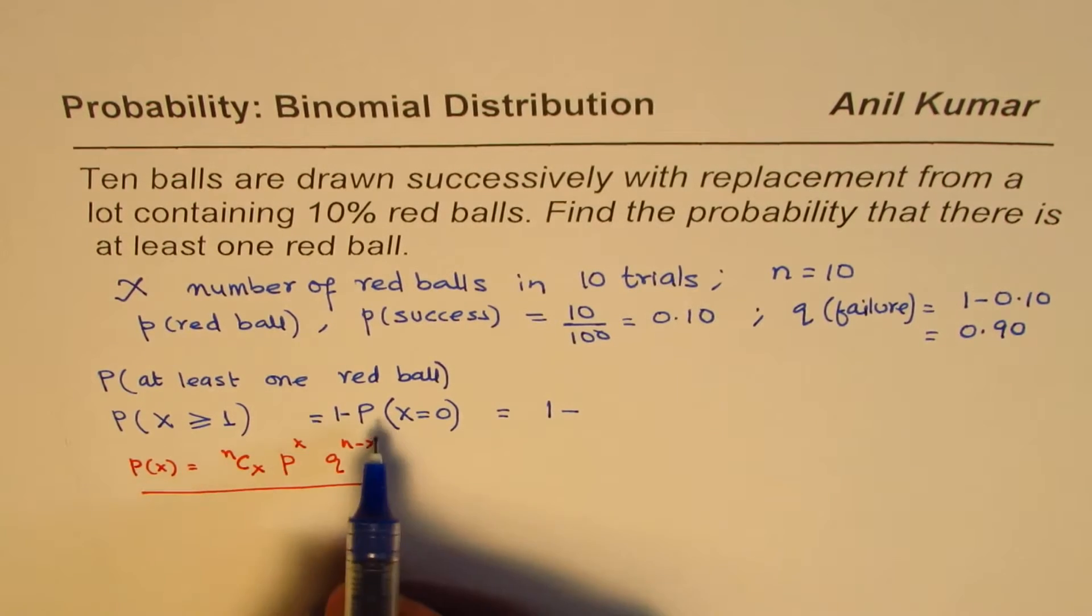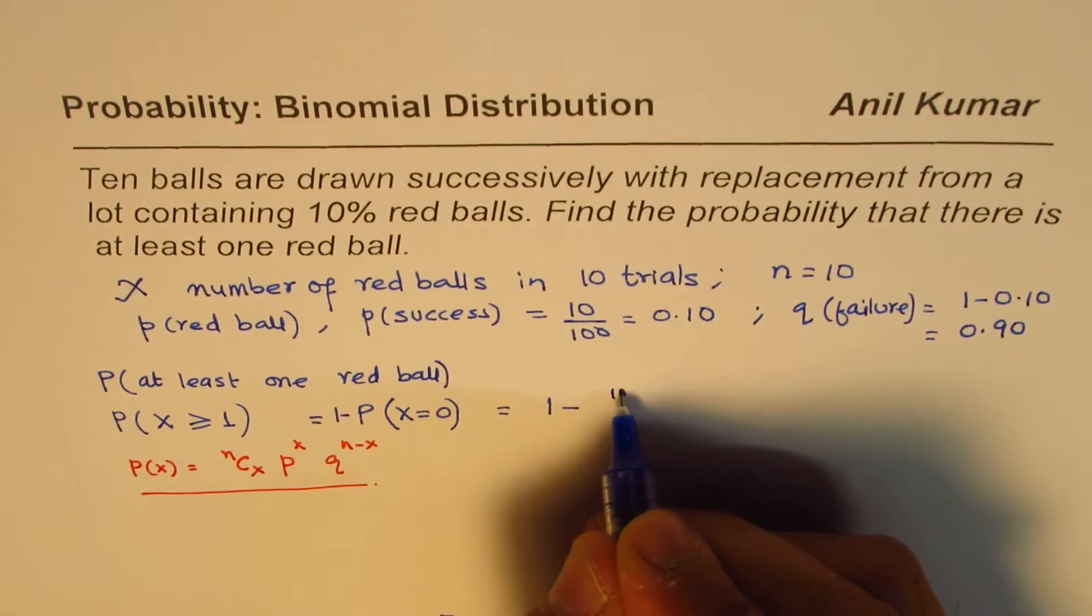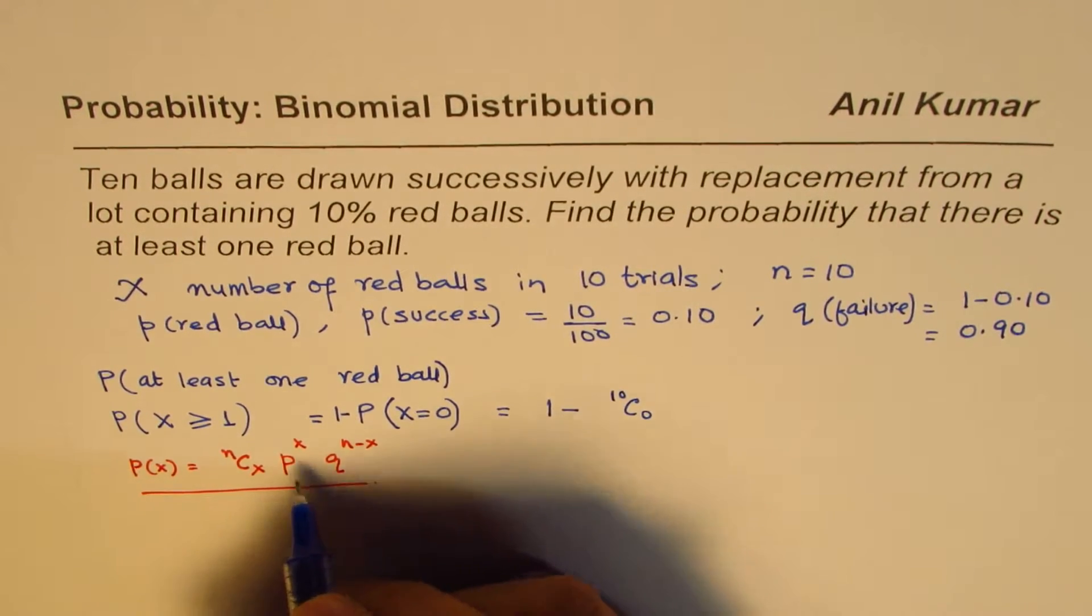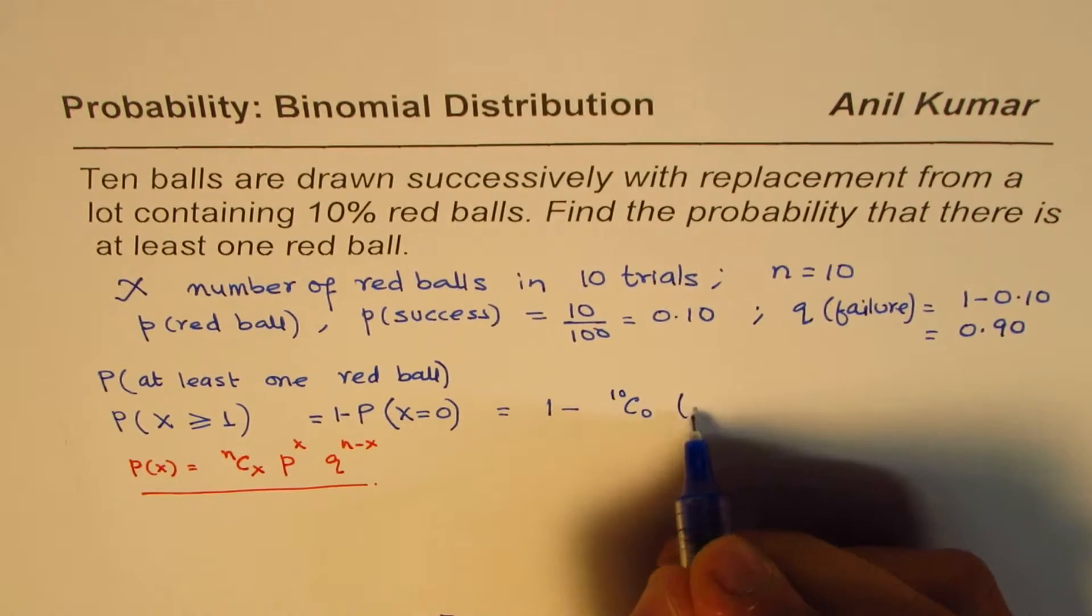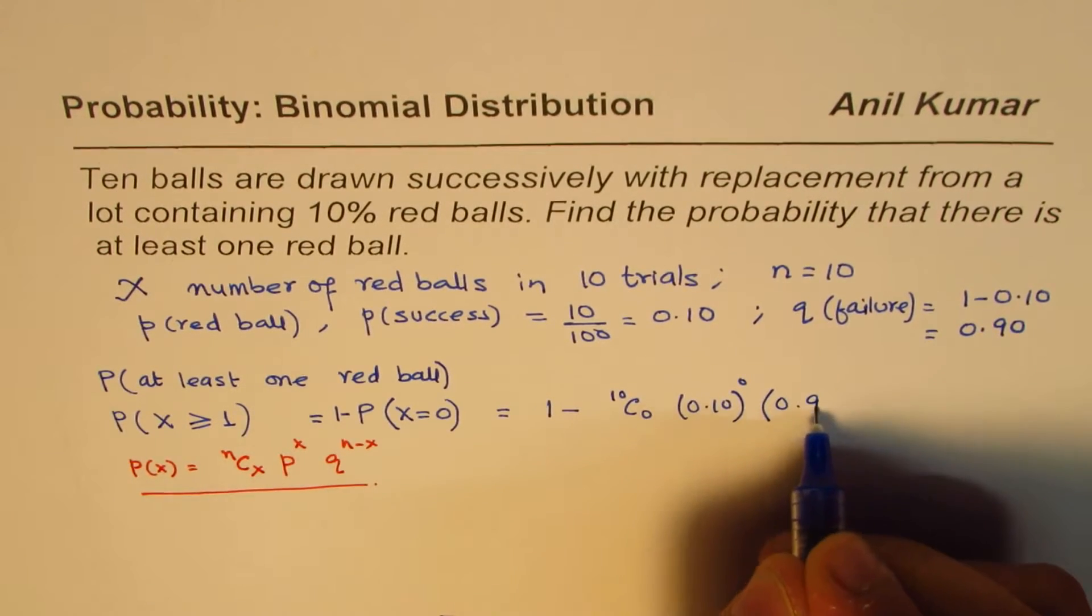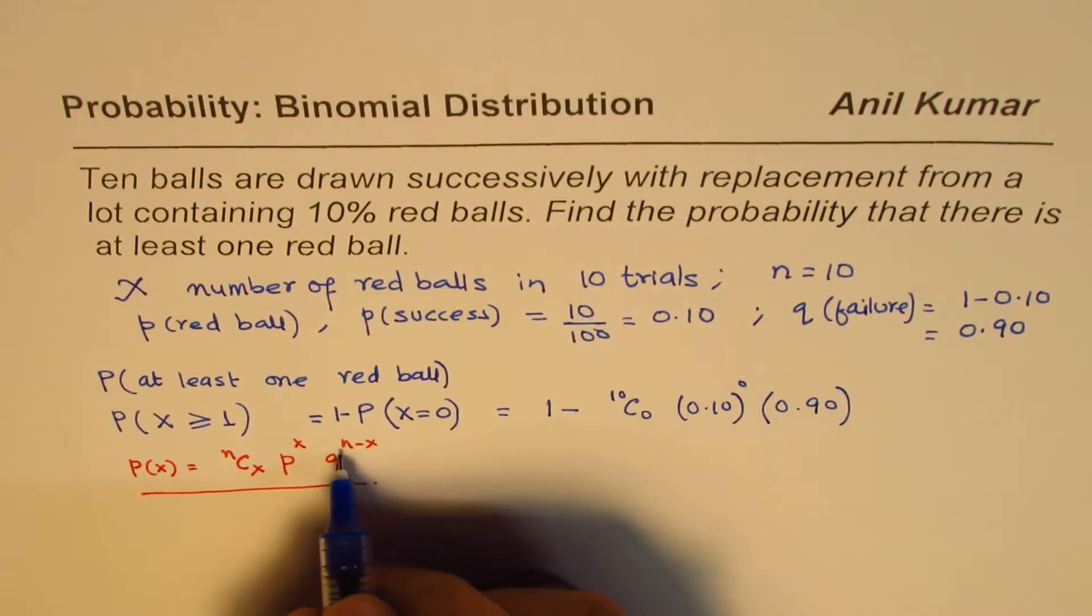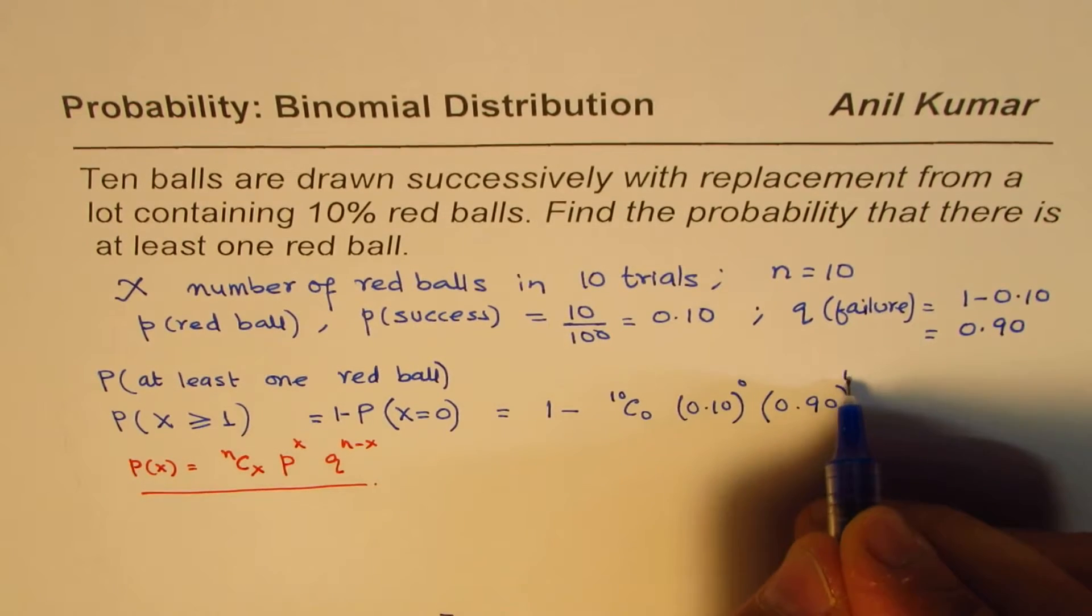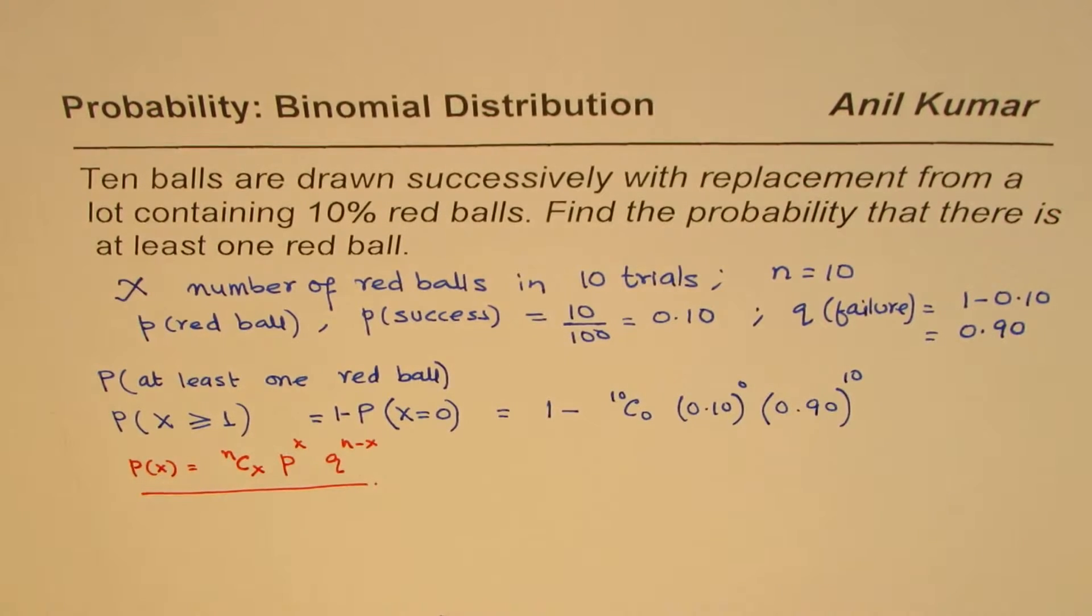X is 0 for us, n is 10 for us. So it is 10C0, p is 0.10, so we write 0.10 to the power of 0, times q is 0.90 to the power of n minus x, which is 10. So that is what we need to calculate.